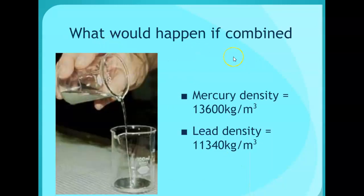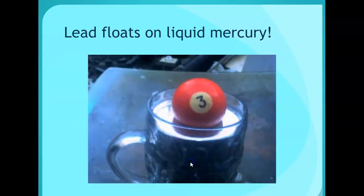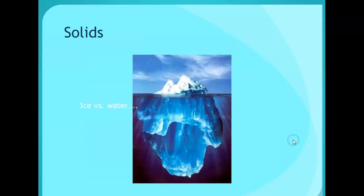So what would happen if we were to combine mercury that has a density like this and lead that has a density like this? This one looks like it's more dense. Let's think about what would happen here. Make a prediction. Lead floats on liquid mercury because it is less dense. That's a pretty cool photo.